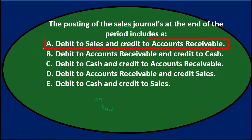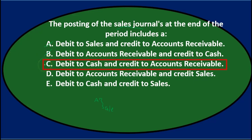A says debit sales and credit accounts receivable — that's meant to turn us around, because we don't debit sales. Sales is a revenue account that only goes up in the credit direction, so eliminate A. B says debit accounts receivable and credit cash — that would be when we got paid on account, after the sale happened, not the actual sale itself. C says debit cash and credit accounts receivable — cash is not recorded in the sales journal, only sales on account, so eliminate C as well.